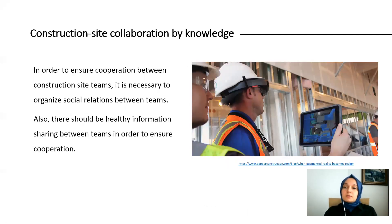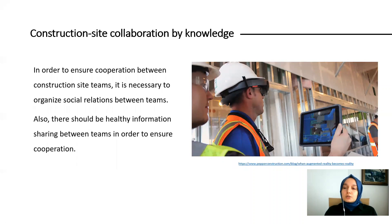In order to ensure cooperation between construction site teams, it is necessary to organize social relations between teams. Also, there should be healthy information sharing between teams in order to ensure cooperation and implementation. Results showed that, with the help of model information centers and tablets, the site teams had accurate application information. Benefits found include document management, real-time data sharing, construction coordination, and accessing up-to-date models on site.